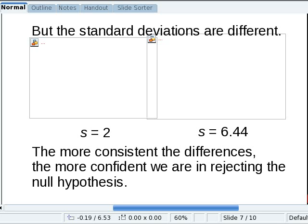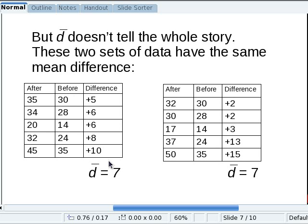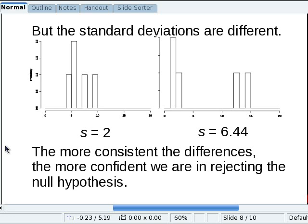The real difference between them is the standard deviations are different. In the first case, this first set of data, the differences are pretty tightly clustered. In the second, they're all over the map, fairly widely spread out.